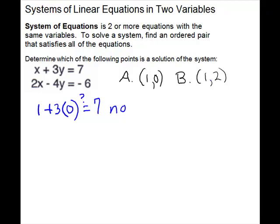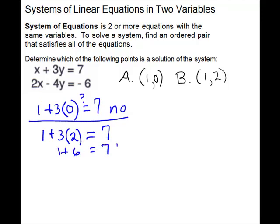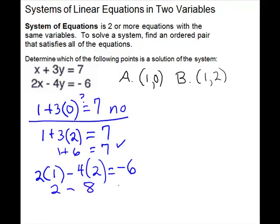So we'll check for point B. Is it a solution of the system? We have to plug it in. So 1 plus 3 times 2 — is that equal to 7? 1 plus 6 equals 7, so it works for that equation. It must also work for the other equation to be a solution of the system. So we have 2 times 1 minus 4 times 2 — is that equal to negative 6? We have 2 minus 8, which equals negative 6.